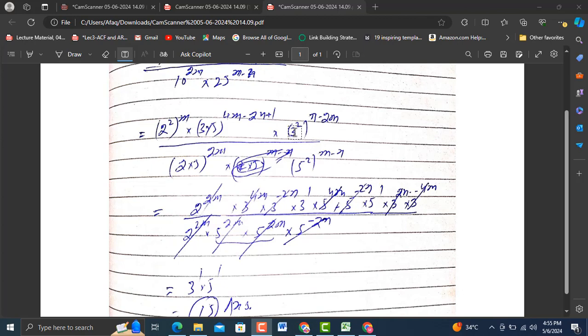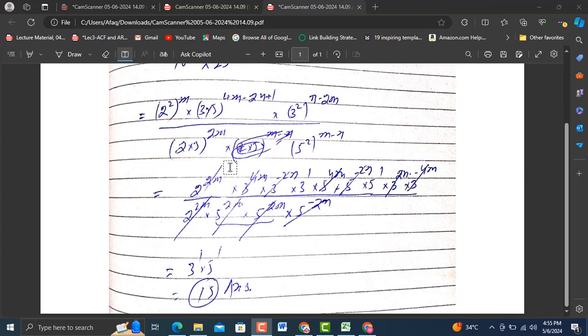3 into 2n minus 3 into 4m, because this 2 will multiply by the power n minus 2m. Now we will come to denominator where we separate the base with their respective exponents: 2 raised to power 2m into 5 raised power 2m into 5 raised power 2m into 5 raised power minus 2m.